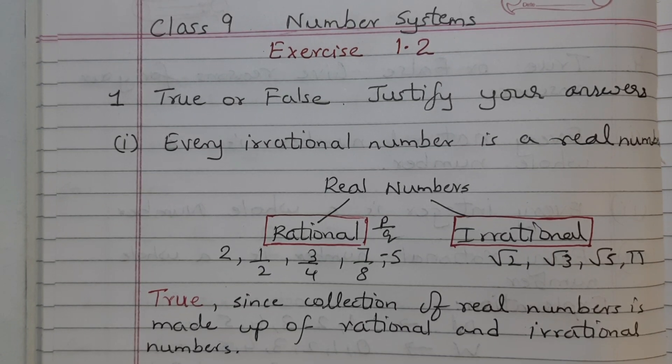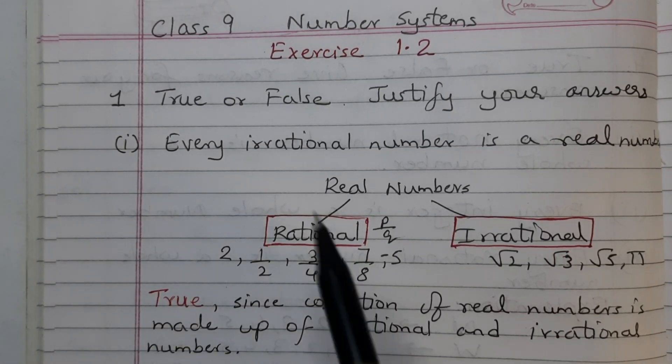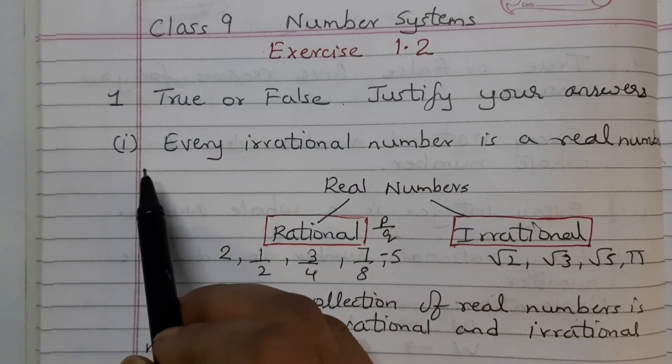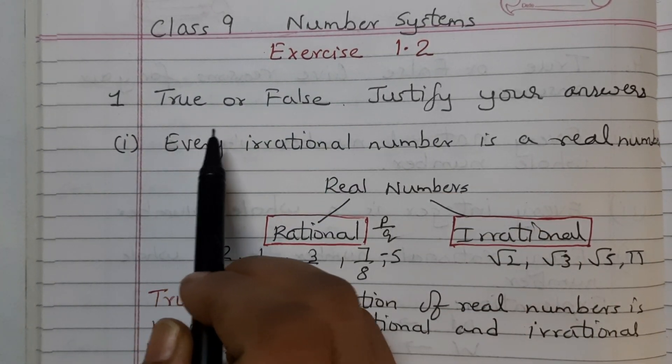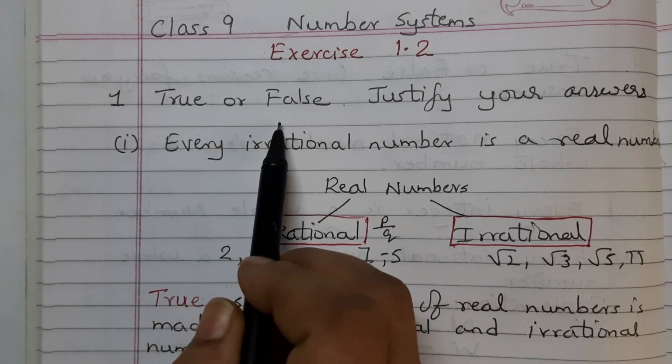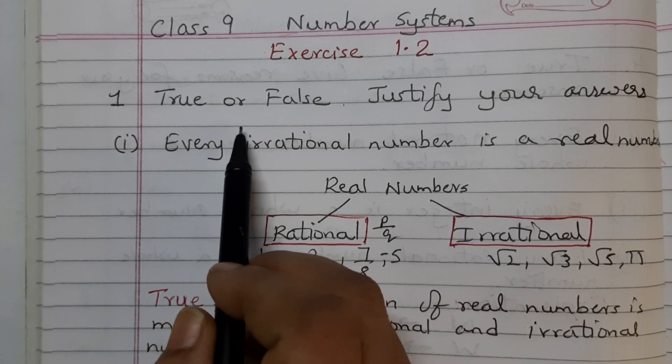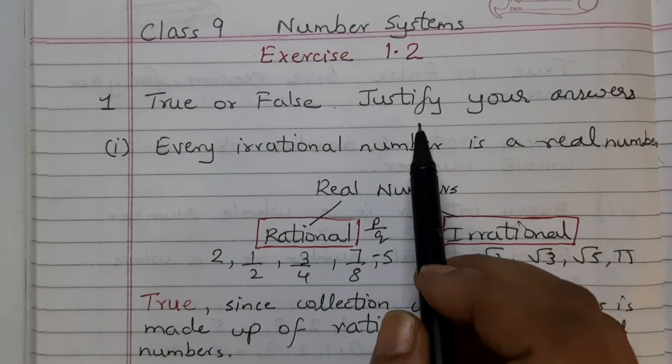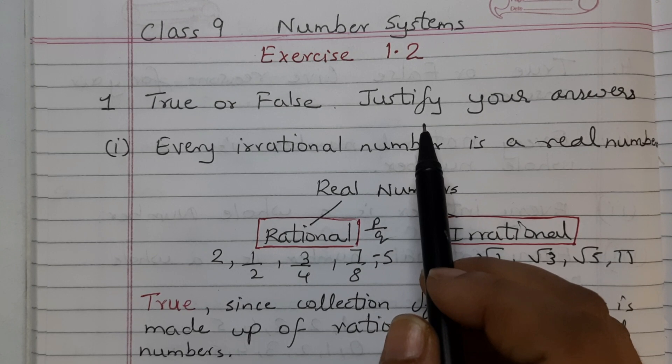Hello students, in this video we shall walk through all the questions of exercise 1.2. The first question is state whether the following statements are true or false. I have written in short true or false. Justify your answers. Justify means we need to give reason why it is true or why it is false.